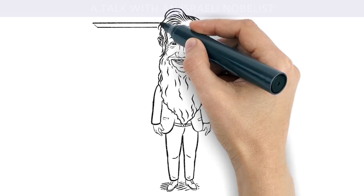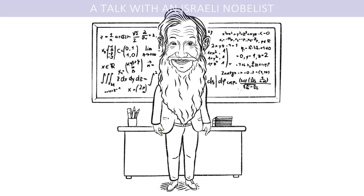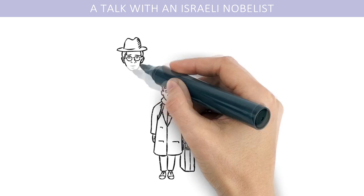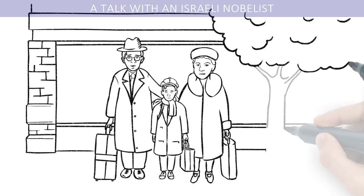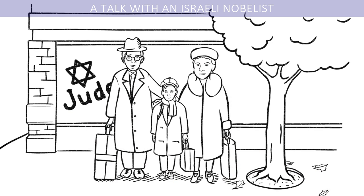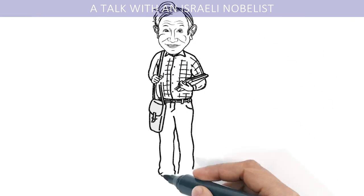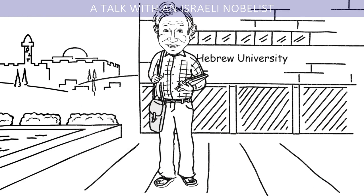Meet Professor Robert Aumann. He is an Israeli mathematician. He was born in 1930 in Germany and fled with his family to the United States in 1938, right before the Kristallnacht Pogroms. In the 1950s, he joined the Hebrew University of Jerusalem.